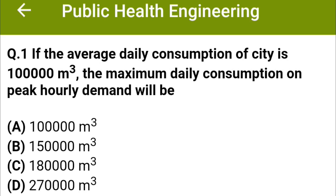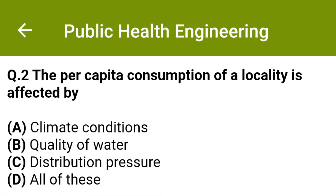Hello friends, welcome to Civil Engineering Exam. Today we are going to see MCQs related to public health engineering. If the average daily consumption of a city is 1 lakh m³, the maximum daily consumption on peak hourly demand will be: option A: 1 lakh m³, option B: 1 lakh 50,000 m³, option C: 1 lakh 80,000 m³, option D: 2 lakh 70,000 m³. The correct answer is option D: 2 lakh 70,000 m³.